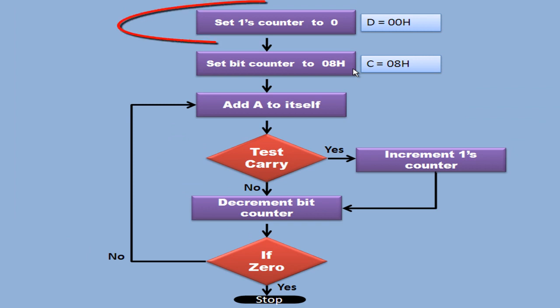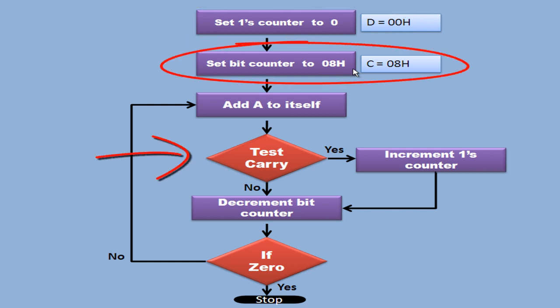So once again, set the ones counter, set the bit counter, identify the bit, test it and count it. If it is 1 and if it is not 1, then go to the next bit. So this is the basic logic we need to follow. Let us see how we can encode each step into a program step.